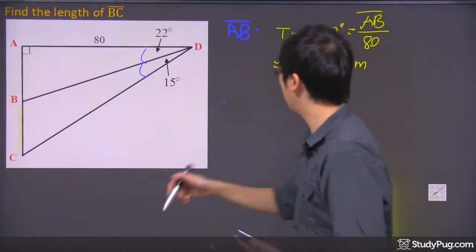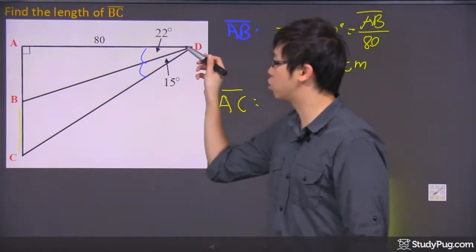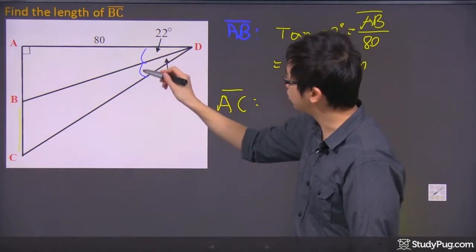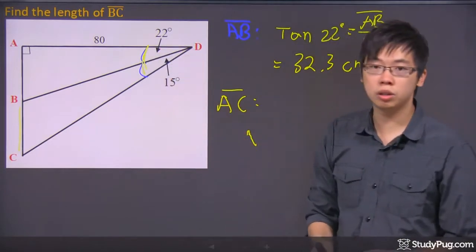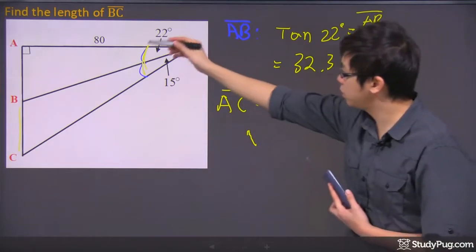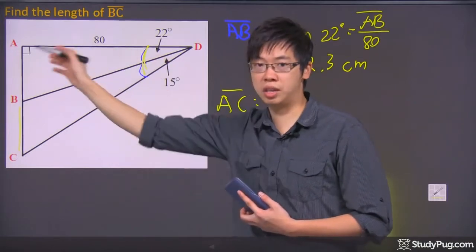So what about A to C? If you're doing A to C, then you have to look at the triangle like this. You have to look at it like this. Because these two angles right here is just 22 plus 15. 22 plus 15, we got 37, right? So from this angle, you're looking for the opposite side, and you have the adjacent 80 again.